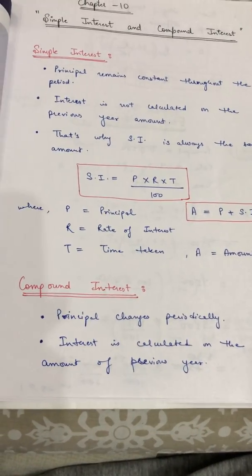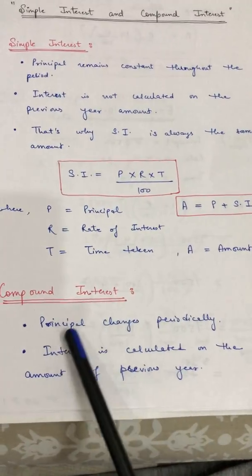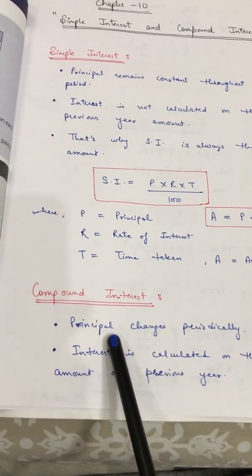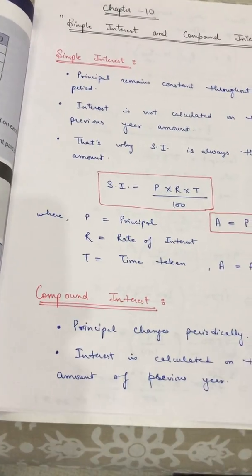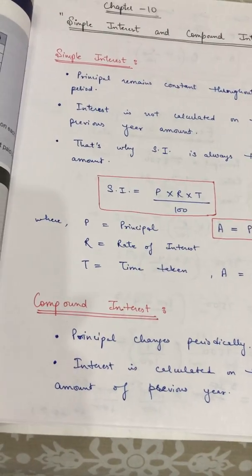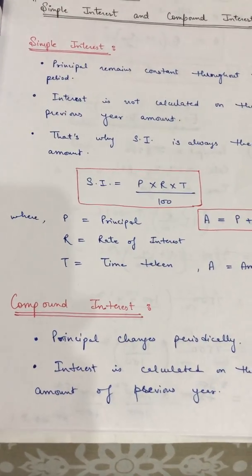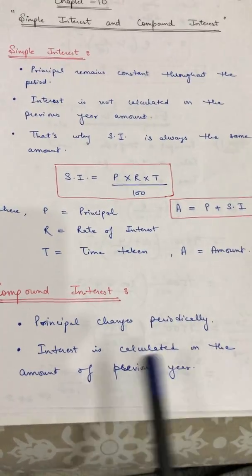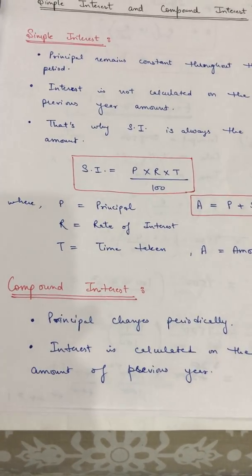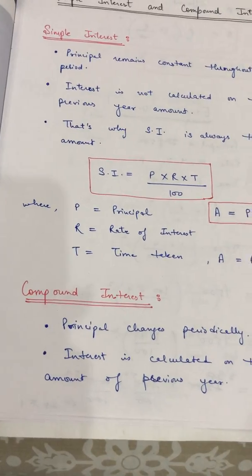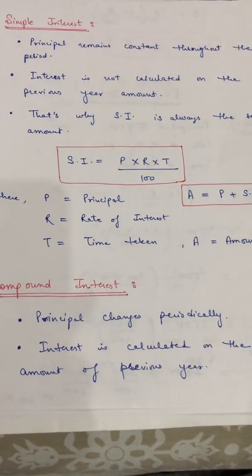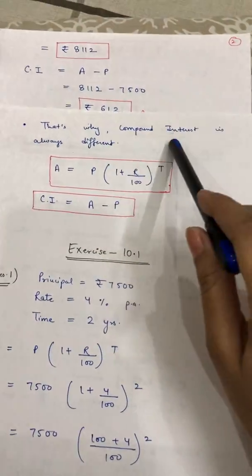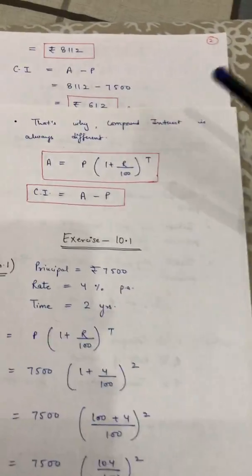Now, what do you mean by compound interest? In compound interest, the principal changes periodically. After some time, the principal gets changed. For example, if your principal was 10,000 in the first year, in the second year it will become 11,000, and so on. The interest is calculated on the amount of the previous year. Whatever amount we calculated in the previous year, a new interest is imposed on that amount. That is why compound interest is always different for every year.